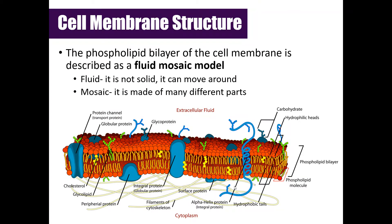The phospholipid bilayer is also known as the fluid mosaic model. Fluid means not solid — it can move around. Mosaic means made of different parts, and you can see in the picture the cell membrane is made of many different parts. One of the key characteristics of the cell membrane is that it is fluid and flexible — it can move around very easily because things are going to have to move in and out of the cell through the cell membrane.